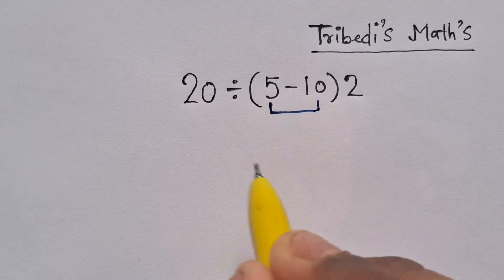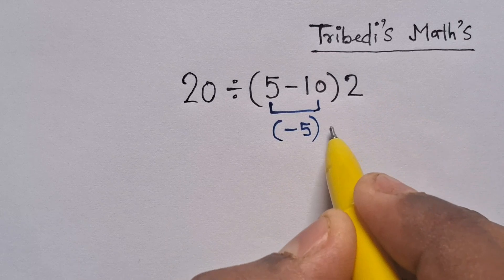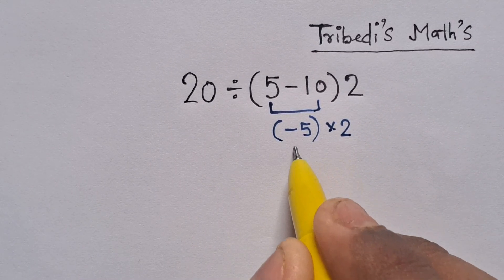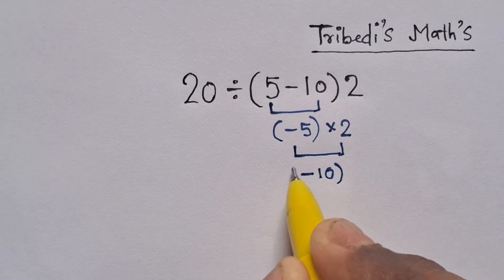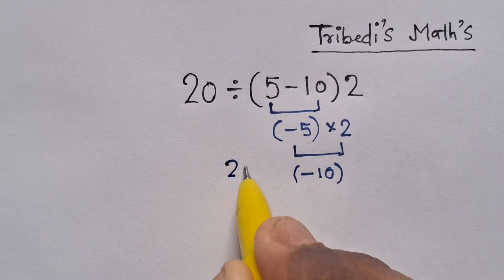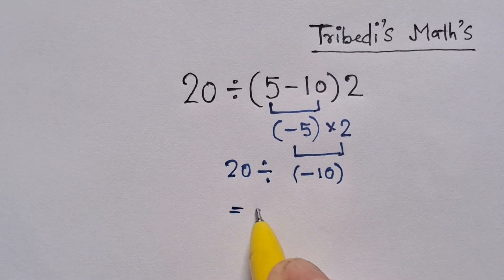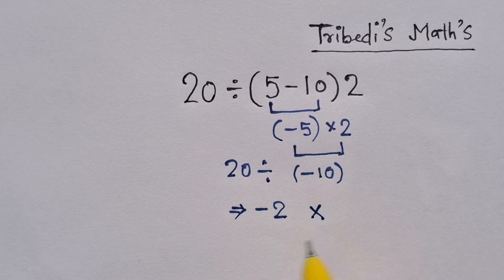So 5 minus 10 equals minus 5, which is multiplied by 2. Now minus 5 times 2 equals minus 10. So finally the expression becomes 20 divided by minus 10. 20 divided by minus 10 equals minus 2, but it's not the correct answer for the expression.